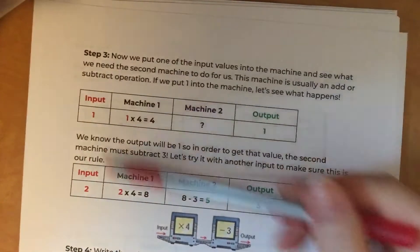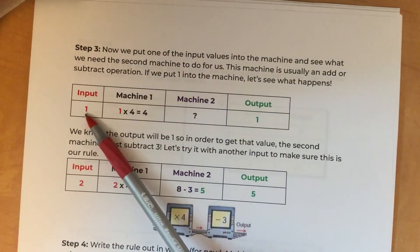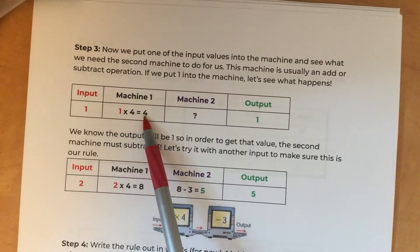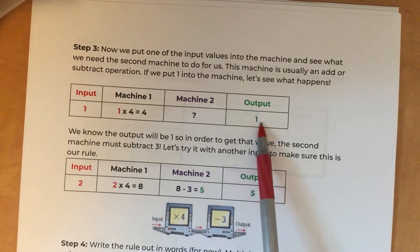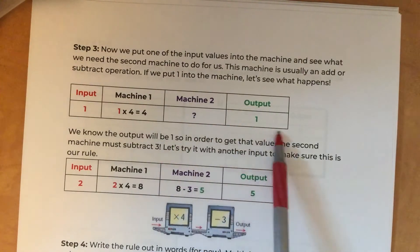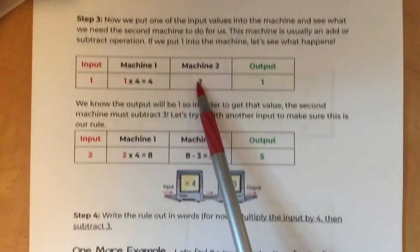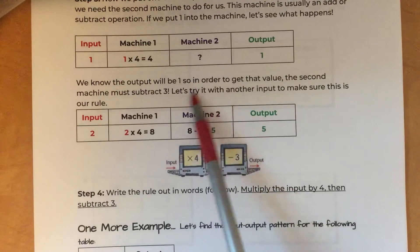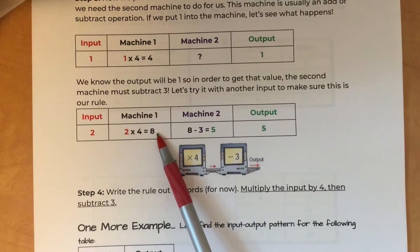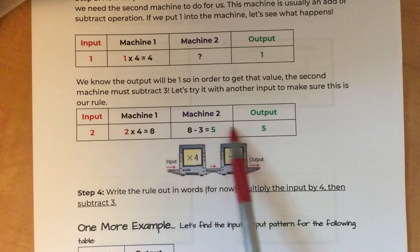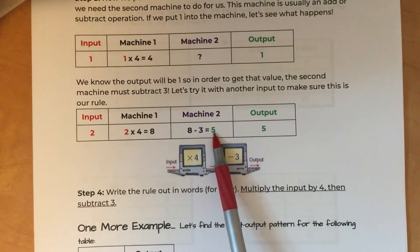Using the first input of one: the first machine brings it up to four, and the table shows an output of one. If I'm at four and need to become one, I subtract three. Then I test with input two: multiply by four to get eight, and the table shows the output should be five. Eight minus three is five — that confirms it was subtract three.